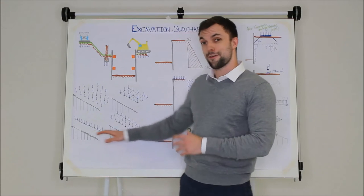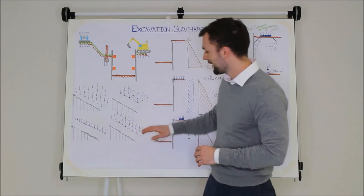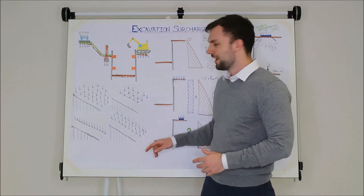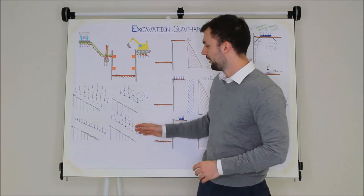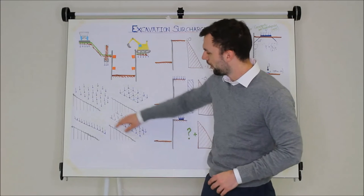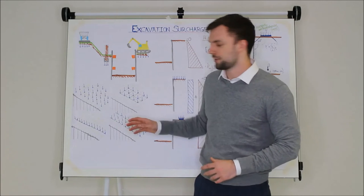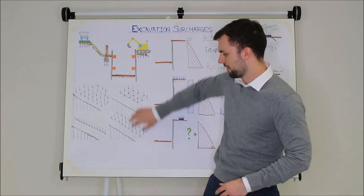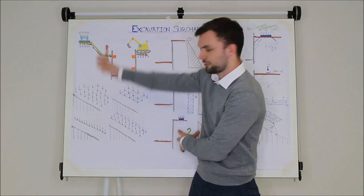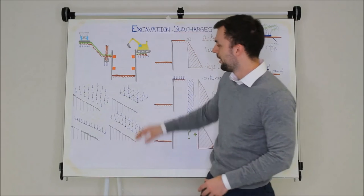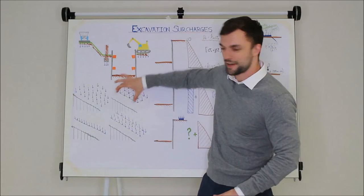Two very similar ones at the bottom here. You have a line surcharge and you've got a strip surcharge. Dealt with in very slightly different ways which we'll look at on the other side of the board, but that's basically again a wall or a foundation that runs alongside your excavation. The difference between this area and this strip is that this is assumed to just have infinite length. It just goes on for the whole length of the excavation whereas this one has a finite end to it.